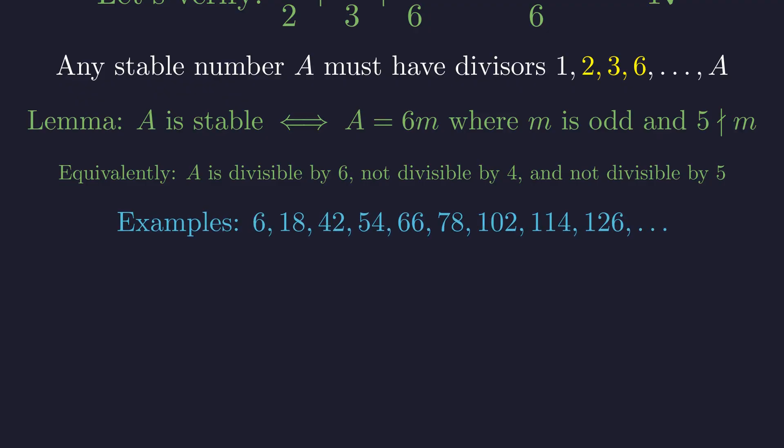Examples of stable numbers include 6, 18, 42, and 54. For instance, 54 is 6 times 9. Since 9 is not divisible by 2 or 5, 54 is a stable number.